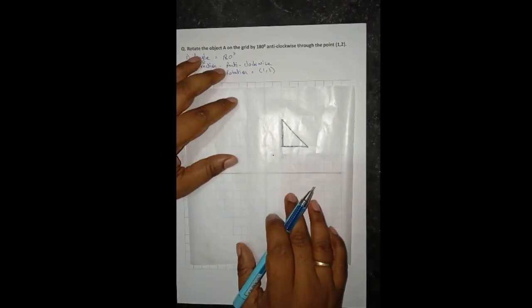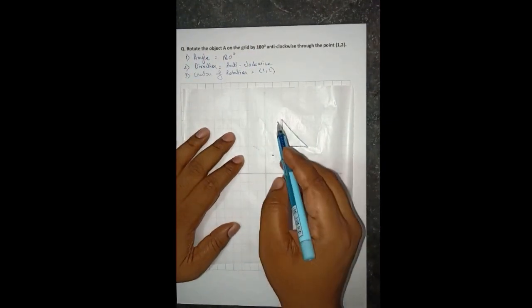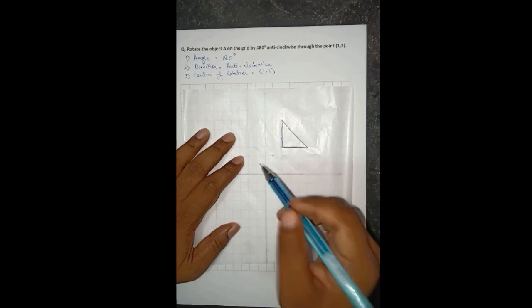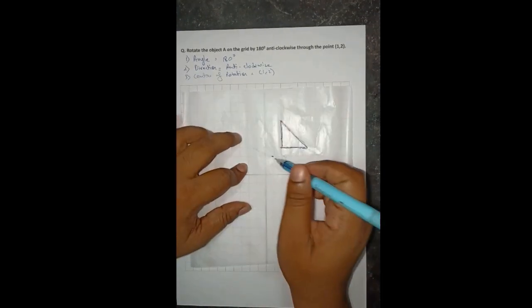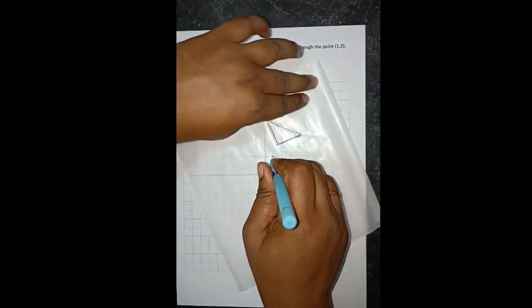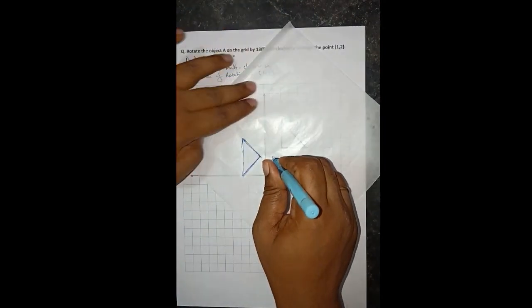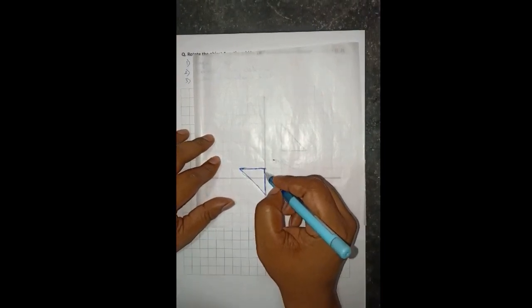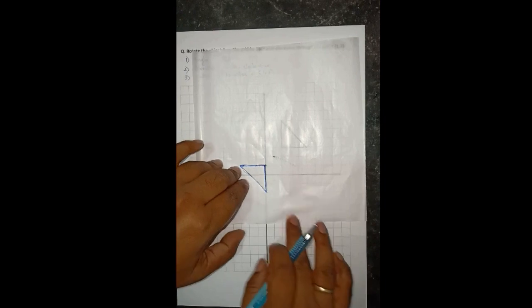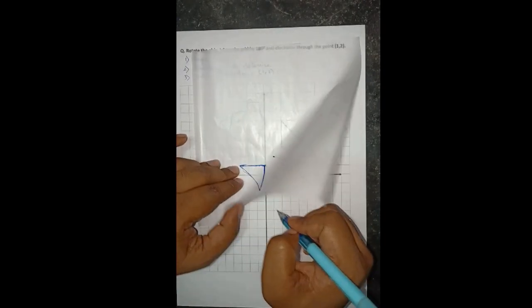Now I will put this tracing paper again on the object, here it is. Since I already have drawn this triangle on this tracing paper I am not doing it again, but you guys have to draw according to the object, whatever object is given. Put my tip of this pen on the center of rotation and I will rotate this tracing paper anticlockwise 90 plus 90, 180 degrees. So this is the required points for 180 degree rotation, let me just mark these points.